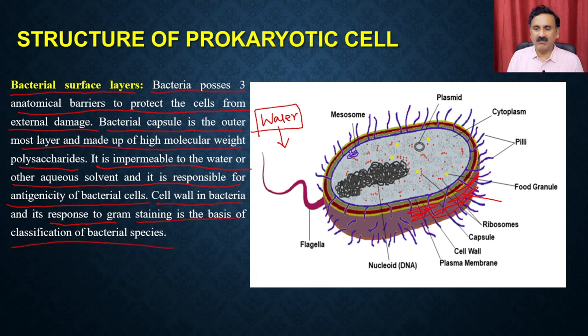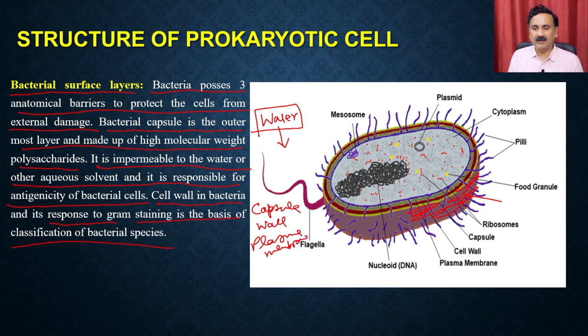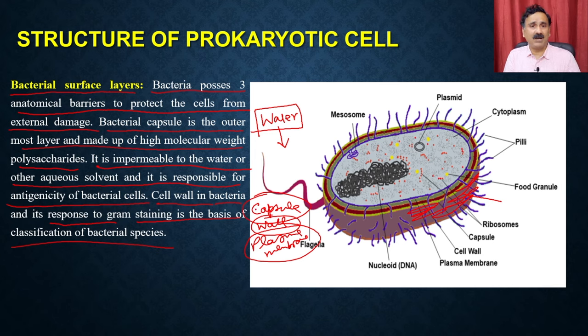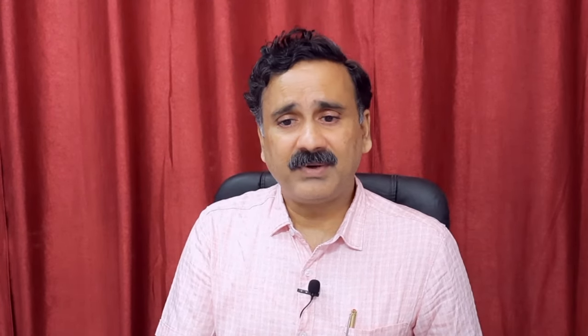Then you have the cell wall in the middle layer, which is responsible for giving its response to gram staining. The third layer is the plasma membrane. So you have three layers: the outermost layer is the capsule, then the cell wall, then the plasma membrane. Bacteria has such a complicated system because it is always present in harsh environmental conditions — it could be in water, strong acid, alkali, or solutions where chemical toxicants are present — so it protects itself using all these layers.